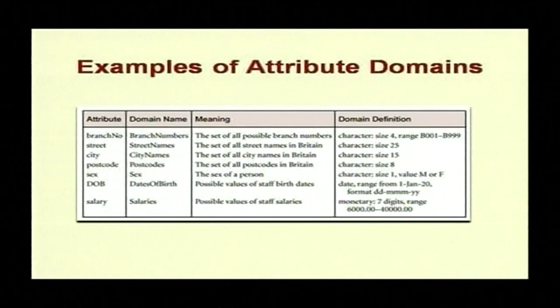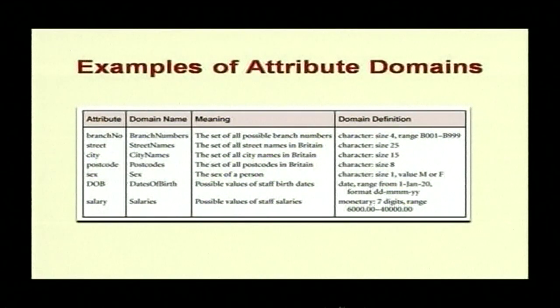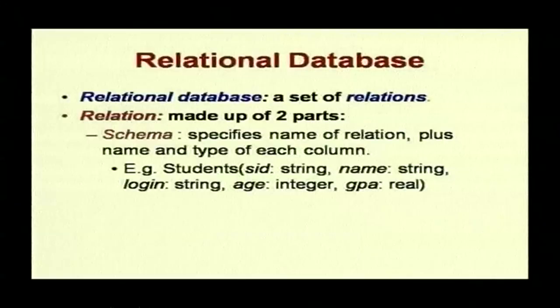Examples of attribute domains: branch number is a size-4 character with a defined range; street names; salary is monetary with 7 digits; postcode is a character of size 8. Some examples of attributes: branch number, street, city, postcode, sex — which is size 1 with only values male or female — and date formats. These illustrate the format in which you specify attribute domains.